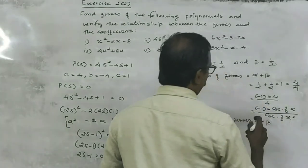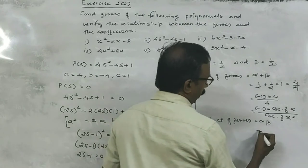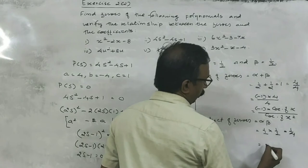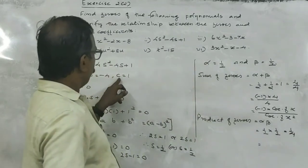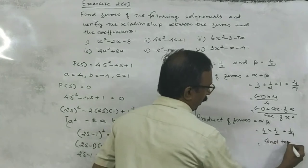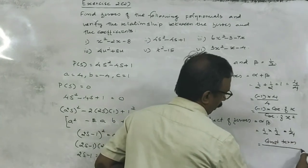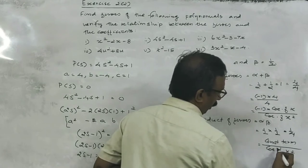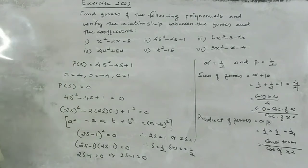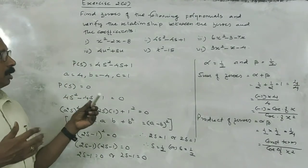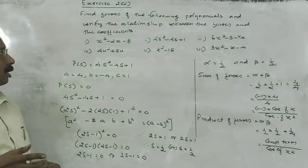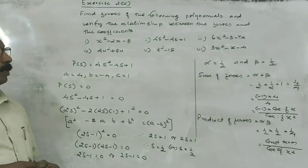Product of zeros: alpha into beta is 1 by 2 into 1 by 2, that is 1 by 4. Here 1 is the constant term divided by coefficient of x squared, that is 1 by 4. Thus we can find the relation between sum of zeros and product of zeros and the zeros of the polynomial.